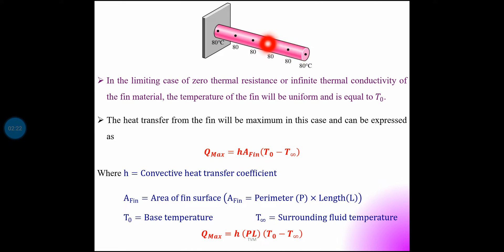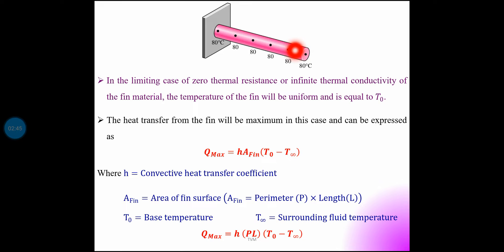The heat transfer from the fin will be maximum in this case and can be expressed as Q-max equals H into A-fin into (T0 minus T-infinity). The heat transfer equation comes from Newton's law of cooling: H into area of fin into temperature difference (T0 minus T-infinity), where T0 is the base temperature throughout the fin.